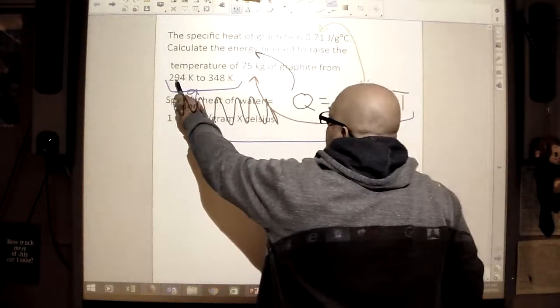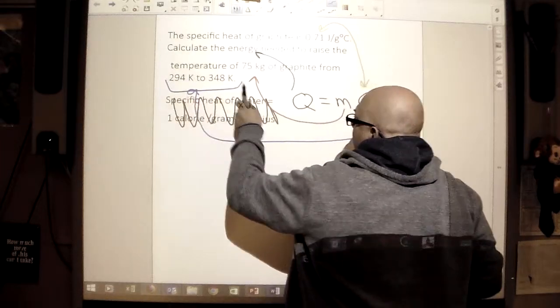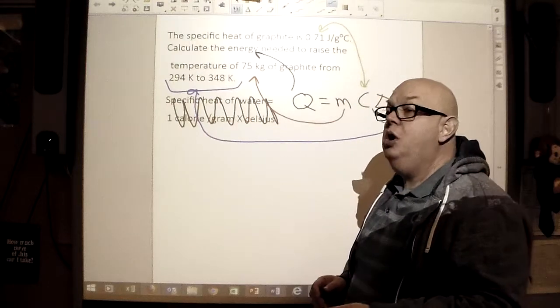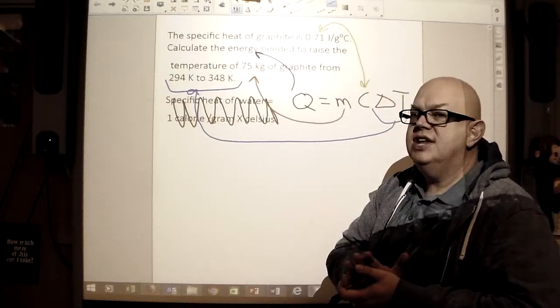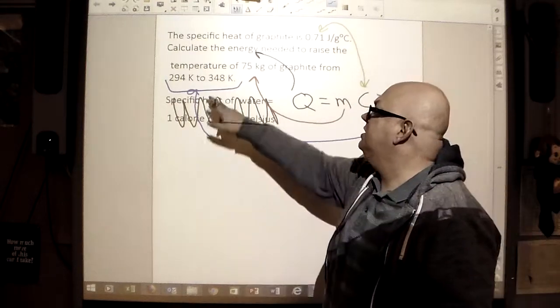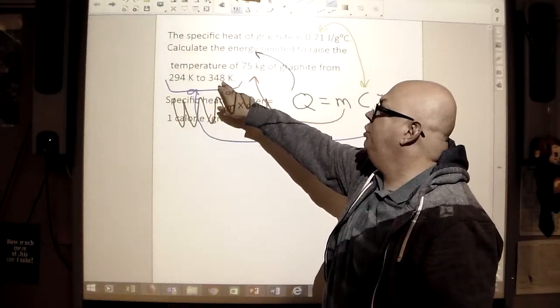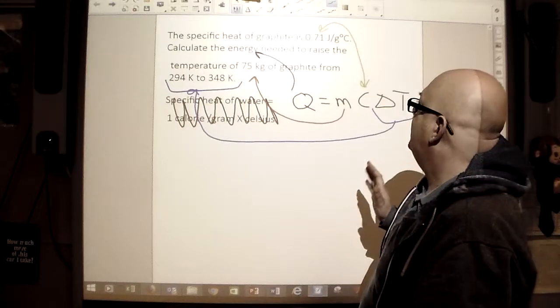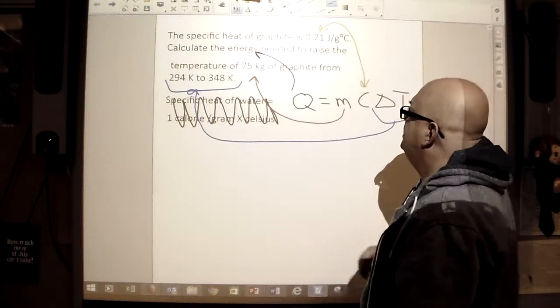Now we have to look at our temperature change here as well. When we look at our temperature change, we're going to look at our ending temperature and subtract the starting temperature. So that's going to be 348 minus 294.